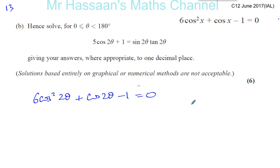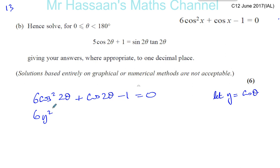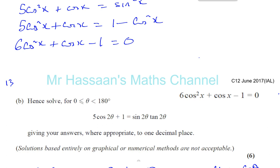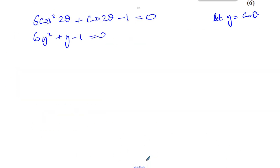We have to solve this equation and find the values of θ which satisfy it. To make it a bit simpler, let y = cos(2θ). Then this becomes 6y² + y - 1 = 0. Remember, cos²(2θ) is the same as cos(2θ) all squared. This is something we are able to factorize.